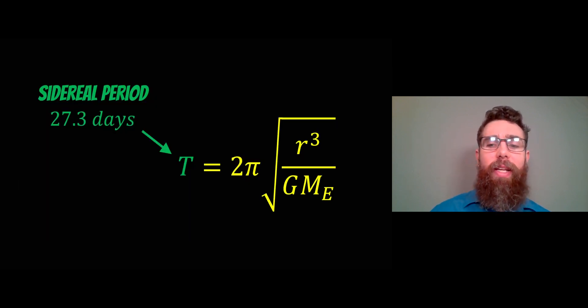So the orbital period is given by this equation. It relates again to the separation between the two objects and the mass. But now we have a value for that orbital period, which is 27.3 days. We can rearrange that for the mass of the Earth.